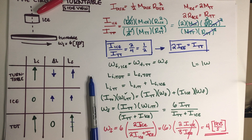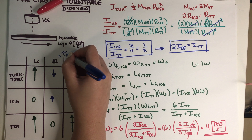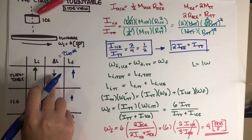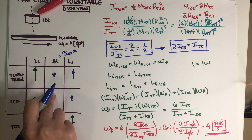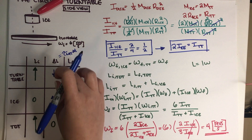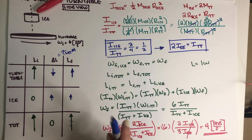Using ΔL = τ_net × Δt: the turntable's angular momentum decreases while skidding, so it experiences a net torque pointing downward. The ice's angular momentum increases from zero, so it experiences a net torque pointing upward. Even though the torques are in opposite directions, their magnitudes are exactly equal because they must add up to zero. That is the final answer for Part B.